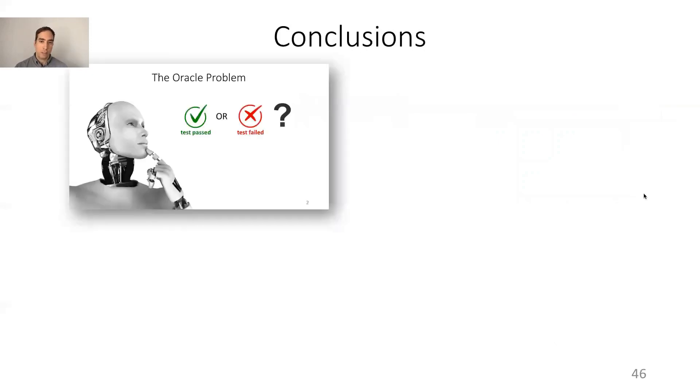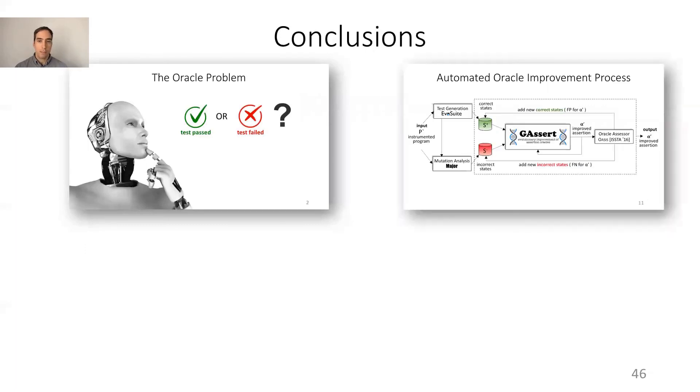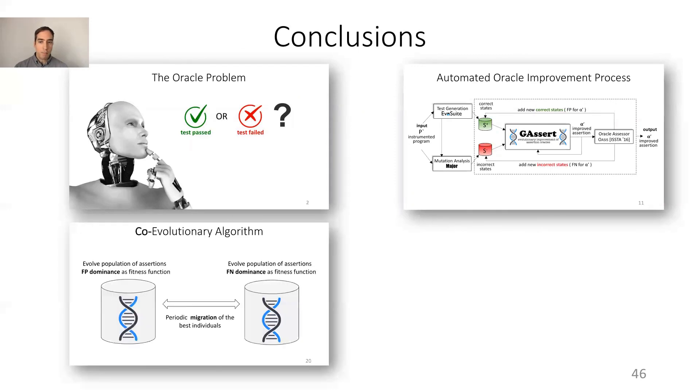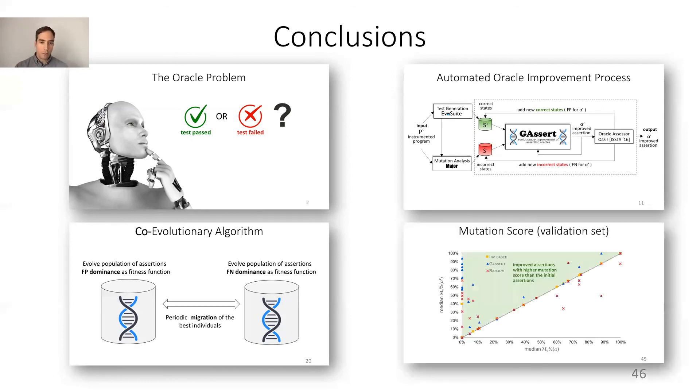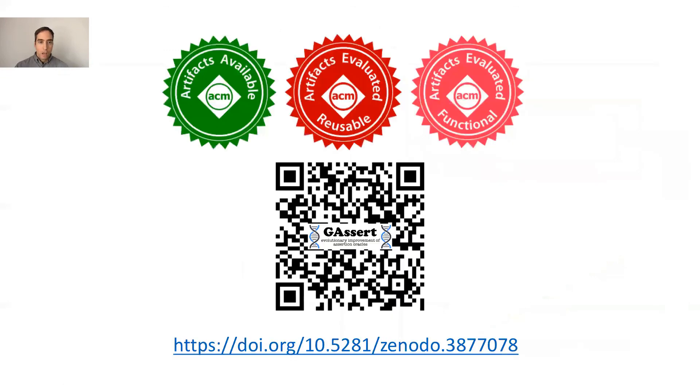To conclude, the oracle problem is the main challenge of test automation. In this paper we present J-Assert, the first technique to automatically improve oracle assertions. J-Assert implements a co-evolutionary algorithm that evolves two populations of assertions to reduce both false positives and false negatives. Our results show that J-Assert is effective at improving assertions, and it performs better than both random-based oracle improvement and invariant-based oracle improvement.